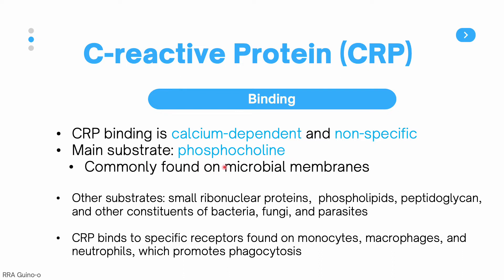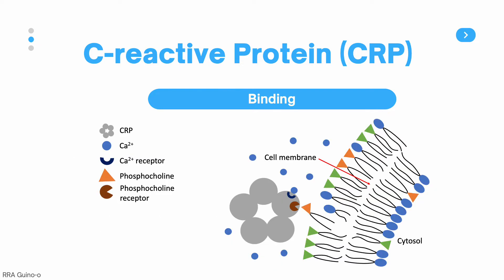The main substrate of CRP is phosphocholine, a compound commonly found on many microbial membranes. Other substrates include small ribonuclear proteins, phospholipids, peptidoglycans, and other constituents of bacteria, fungi, and parasites. CRP can also bind to specific receptors found on monocytes, macrophages, and neutrophils, allowing it to promote phagocytosis. The mechanism of CRP binding requires calcium to first attach to the calcium receptor before CRP can bind to its substrate — for example, phosphocholine on bacterial cell membranes.